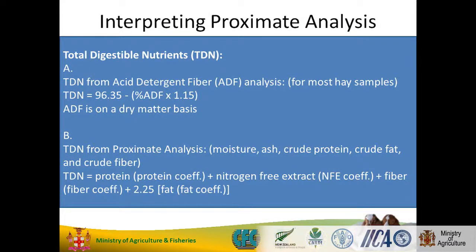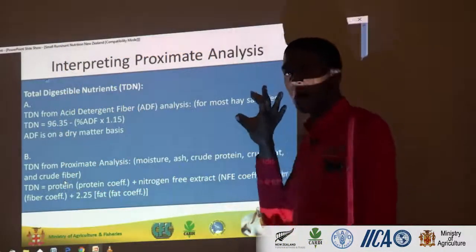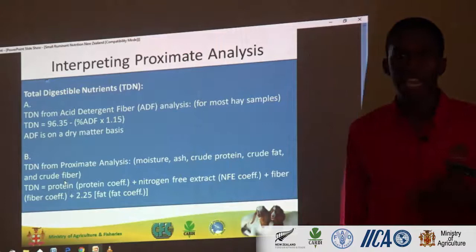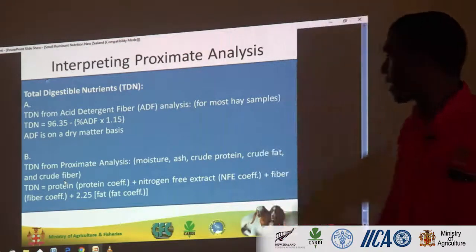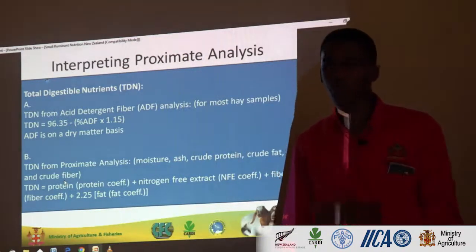Total digestible nutrients — you need the ADF to calculate this. There's also a more complex formula that nutritionists use, looking at nitrogen-free extract. But for the simple on-farm approach, if the ADF is say 46%, you can just plug it into that formula and determine your feed value.